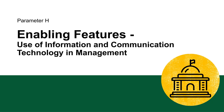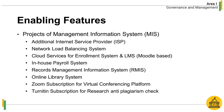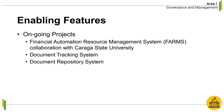Parameter H: Enabling Features — Use of Information and Communication Technology in Management. There was a restructuring in the management information system, particularly the creation of units for targeted or specialized services. Ongoing ICT projects include the Financial Automation Resource Management System in collaboration with Caraga State University, the Document Tracking System, and the Document Repository System.